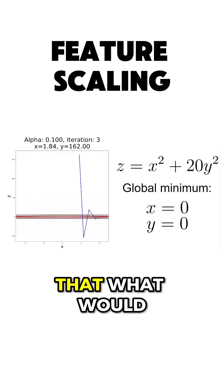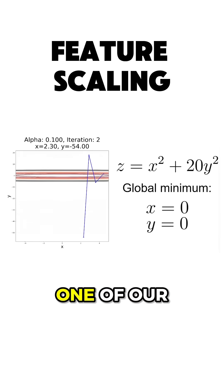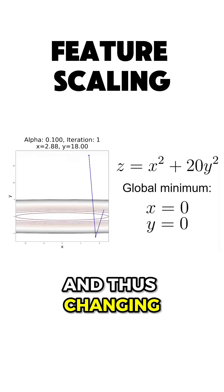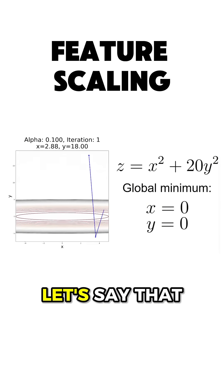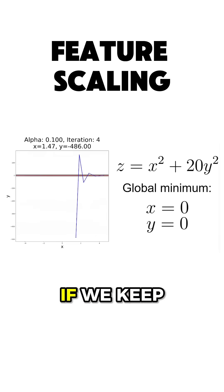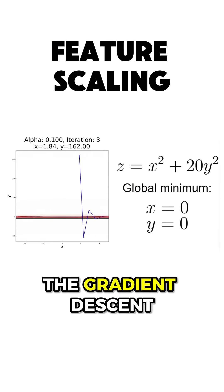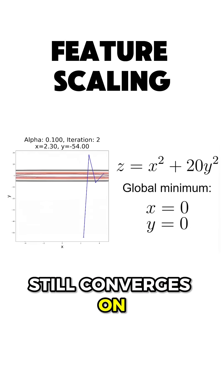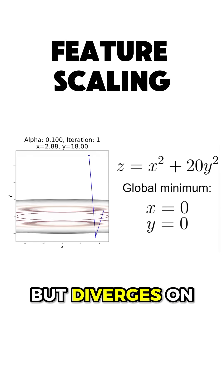So having said that, what would happen if we increase one of our coefficients and thus changing the scale of our features? Let's say that we increase the coefficient for the y variable. If we keep the same learning rate alpha, as you can see on the left image, the gradient descent still converges on the x-axis, but diverges on the y-axis.